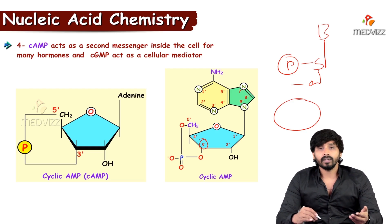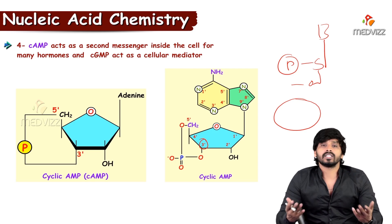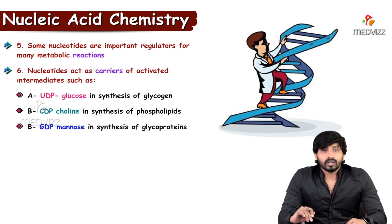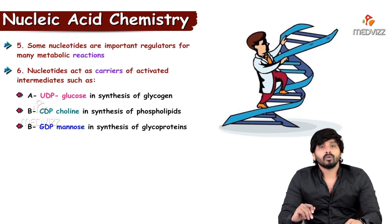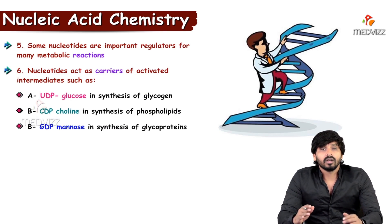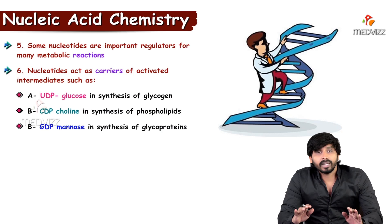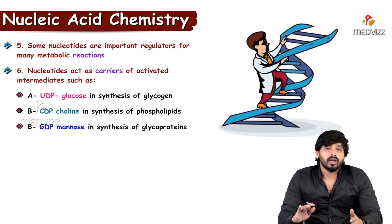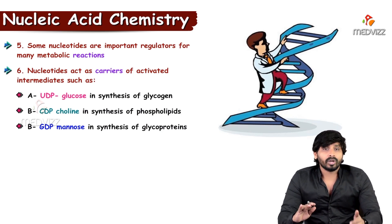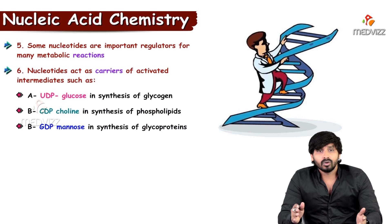Similarly, cyclic GMP is formed in the same way — if guanine replaces adenine, it becomes cyclic GMP. Some nucleotides are also important regulators of many metabolic reactions, such as in pathways like glycogen synthesis and pyrimidine synthesis; without them, these metabolic reactions cannot proceed.